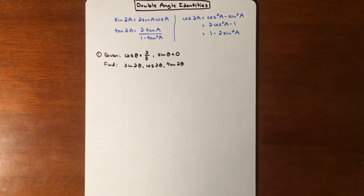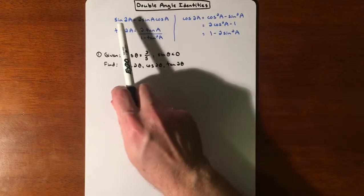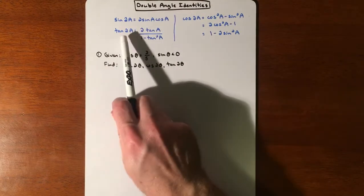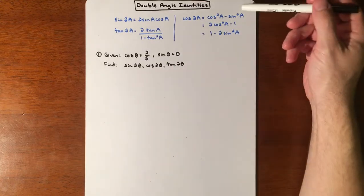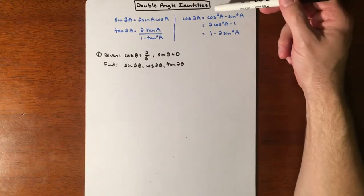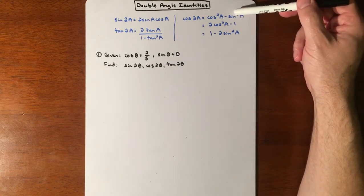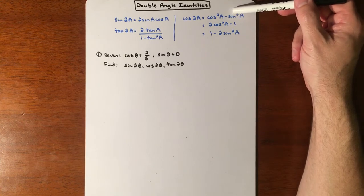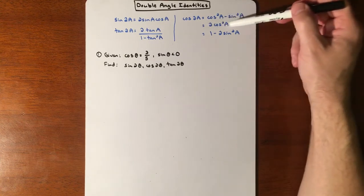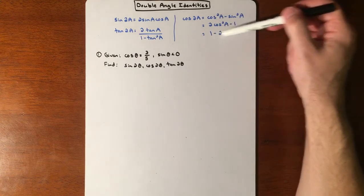All right, in this example we're going to be talking about double angle identities and we have a couple formulas for this. So sine of 2a equals 2sin(a)cos(a), tangent of 2a equals 2tan(a)/(1-tan²(a)), and cosine of 2a actually has three different versions: cos²(a)-sin²(a), and you can use Pythagorean identities to substitute and get 2cos²(a)-1 or 1-2sin²(a).